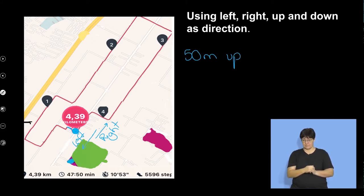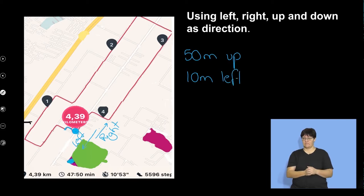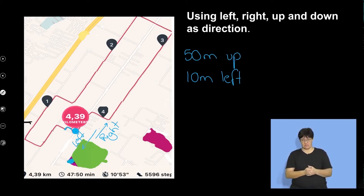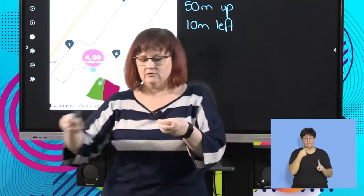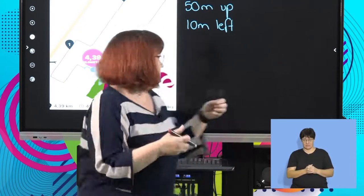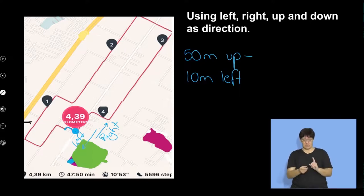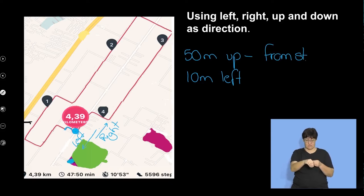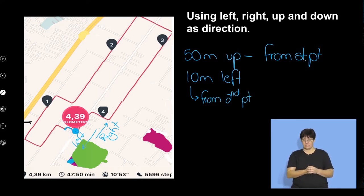Then she turned a corner and went to the left — let's say that's 10 meters. I'm just giving distance here, not relative to anything. But actually, telling you where she went — giving a distance and a direction — makes it a displacement. This first displacement is measured from her starting point.